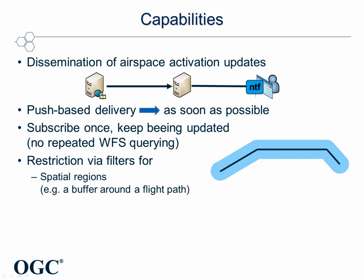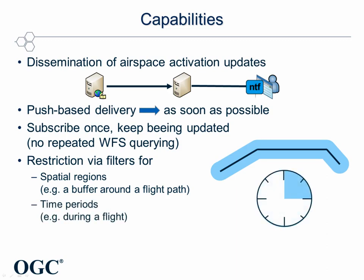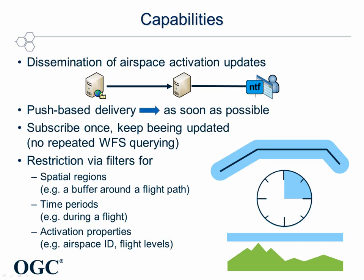These filters can be expressed using the OGC filter encoding and web services notification topic expressions. For example, filters can be built for spatial regions like a buffer around a flight path. They can also depend on the temporal properties of the activation to restrict updates to those that affect the flight time, or they may use any other property like the airspace ID or the flight level. All these filters can be combined by logical operators such as AND or OR.